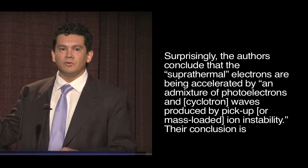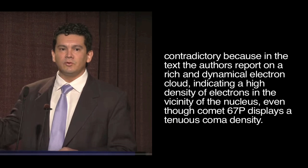Surprisingly, the authors conclude that the suprathermal electrons are being accelerated by an admixture of photoelectrons and cyclotron waves produced by pickup or mass-loaded ion instability. The conclusion is contradictory because, in the text, the authors report on a rich and dynamic electron cloud indicating a high density of electrons in the vicinity of the nucleus, even though Comet 67P displays a tenuous coma density.